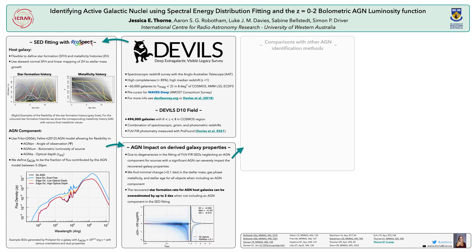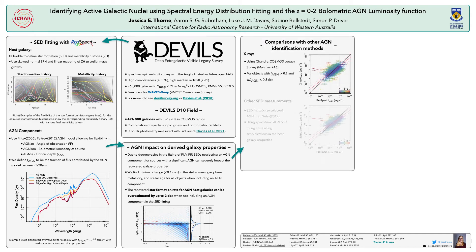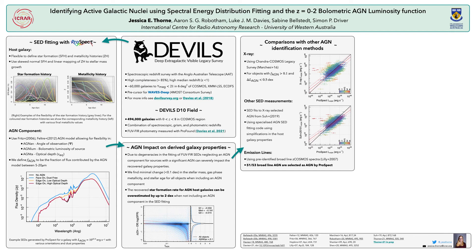We've also shown that the AGN identified with PROSPECT compare really nicely to other methods. We find that we can recover X-ray selected AGN in good agreement with their X-ray luminosities. We also show that our luminosities agree well with other SED fitting codes designed to get the AGN luminosity that make a lot of simplifications in the host galaxy properties. And we also show that for 51 out of 53 broadline AGN, we can select them as AGN by PROSPECT as well.